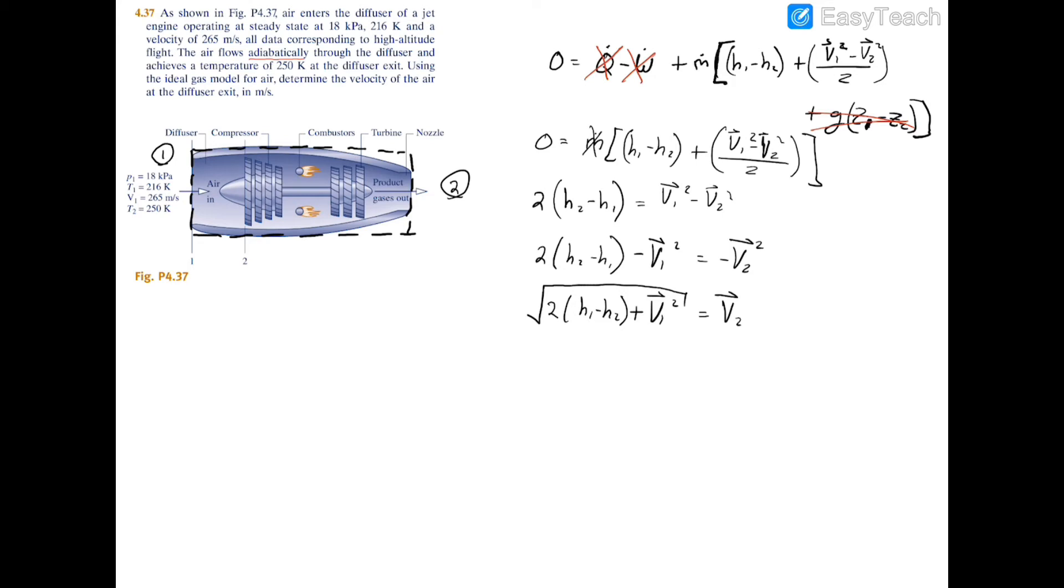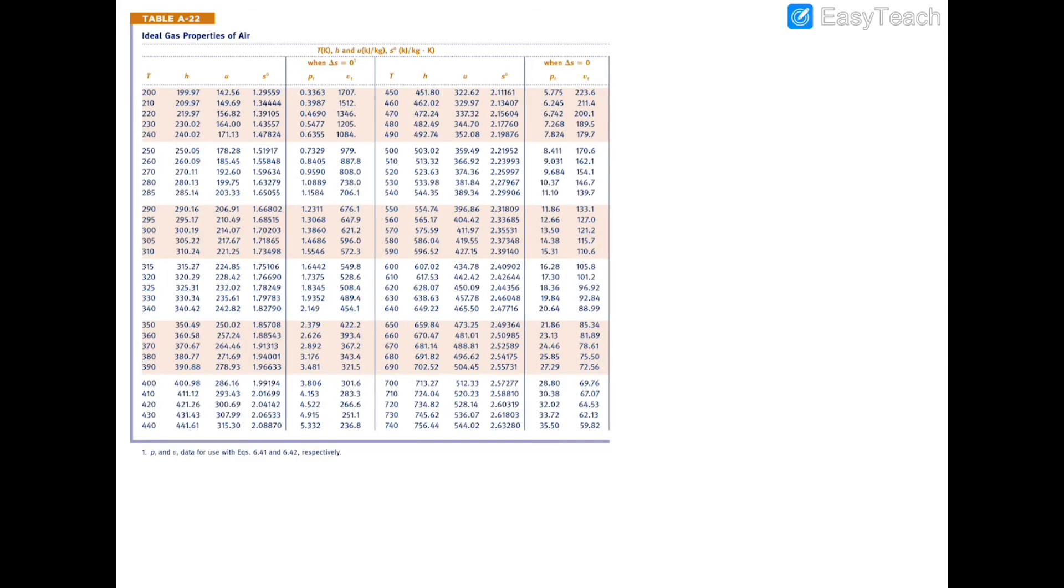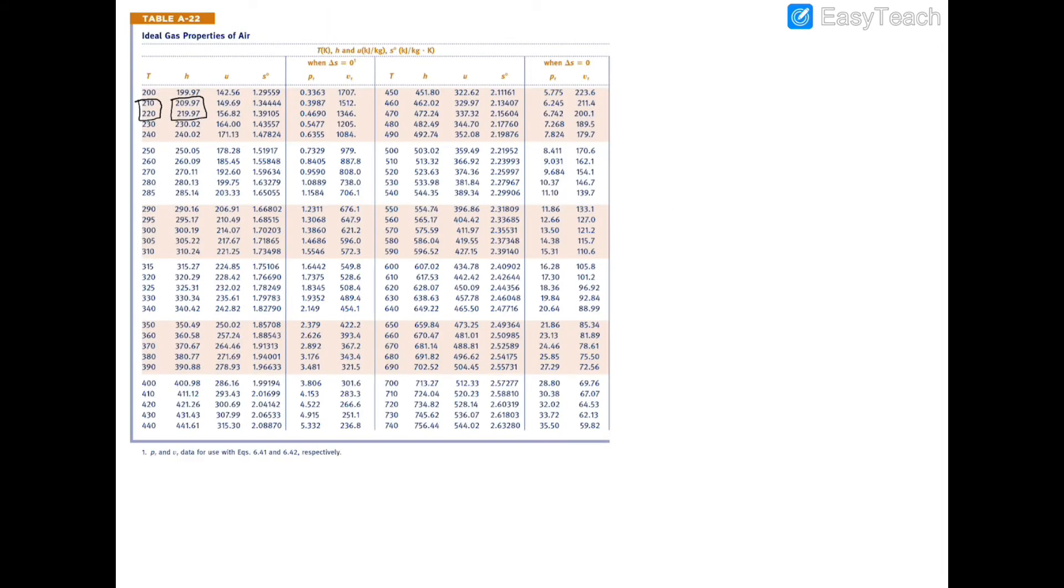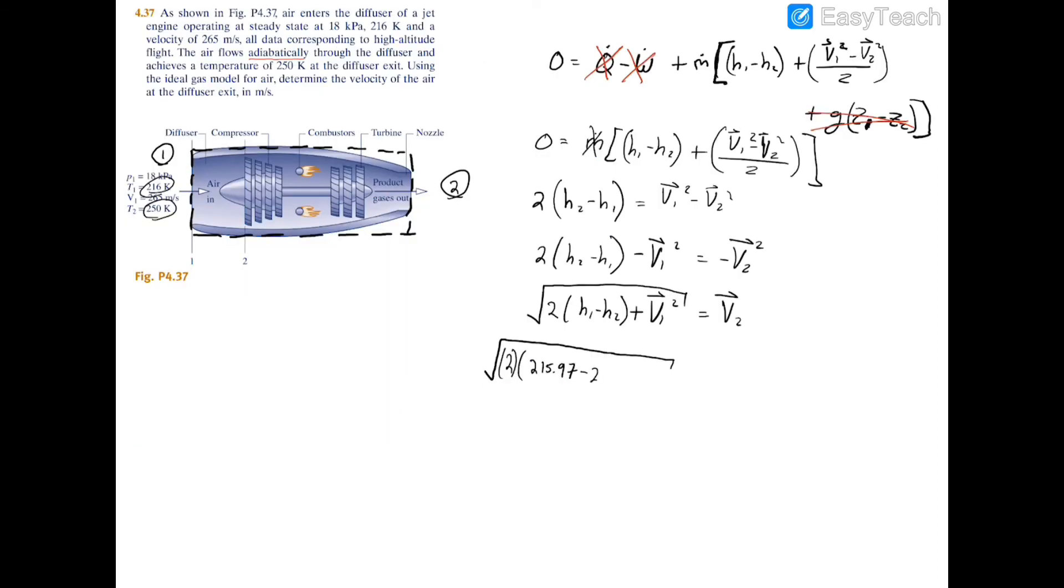All right, so let's see what we can start filling in. We're going to start the square root off. We're going to have two times h1. At T1 we had 216 kelvin. Go to our property table, which is table A-22. Go to 216 and the closest thing is 210 and 220, so our enthalpy for 216 kelvin should be between those two numbers. If you do your interpolation, you'll find that it equals 215.97 kilojoules per kilogram. Minus h2, so h2 you should have 250 kelvin, which is 250.05, so minus 250.05.